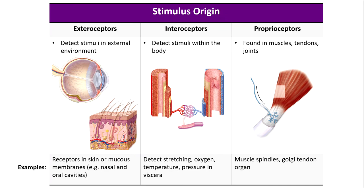Stimulus origin is another criteria we can consider — where is the receptor stimulus coming from? Exteroceptors detect stimuli found in the external environment and are found in the skin or mucous membranes such as the nasal and oral cavities. Interoceptors detect stimuli inside the body itself, found in the walls of the viscera — they detect things such as blood vessel stretching, levels of oxygen or carbon dioxide dissolved in the blood, and internal temperature.